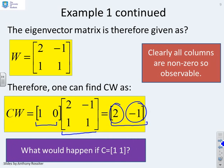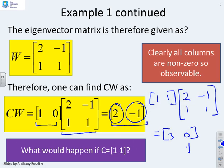So the system is observable. But what would happen if I change C? So here I had C equals 1 0. If it was 1 1, I'd end up with 1 1 multiplied by 2 1 minus 1 1. And that was going to give me 3 and 0. And what do you notice?